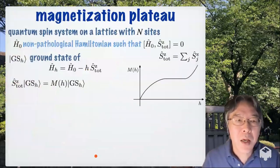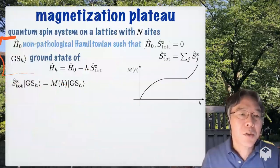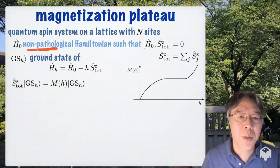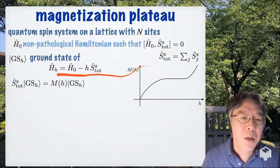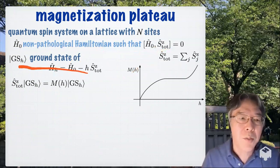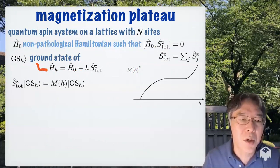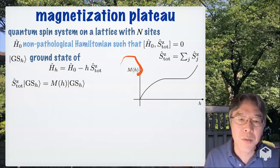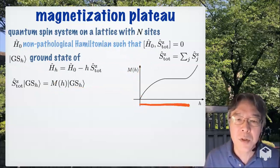Now let's look at magnetization process. Consider any quantum spin system on a lattice with N sites, and let H_0 be any non-pathological Hamiltonian that commutes with the total S^z operator. Here, this H_H is the Hamiltonian of the system under uniform magnetic field H in the z direction. And by GS_H, I denote the ground state of this Hamiltonian, and by M_H, the corresponding magnetization. And in the zero temperature magnetization process, we examine the behavior of M_H, the magnetization, as a function of H. And suppose that there appears a plateau. So here, M_H stays constant when we change H.